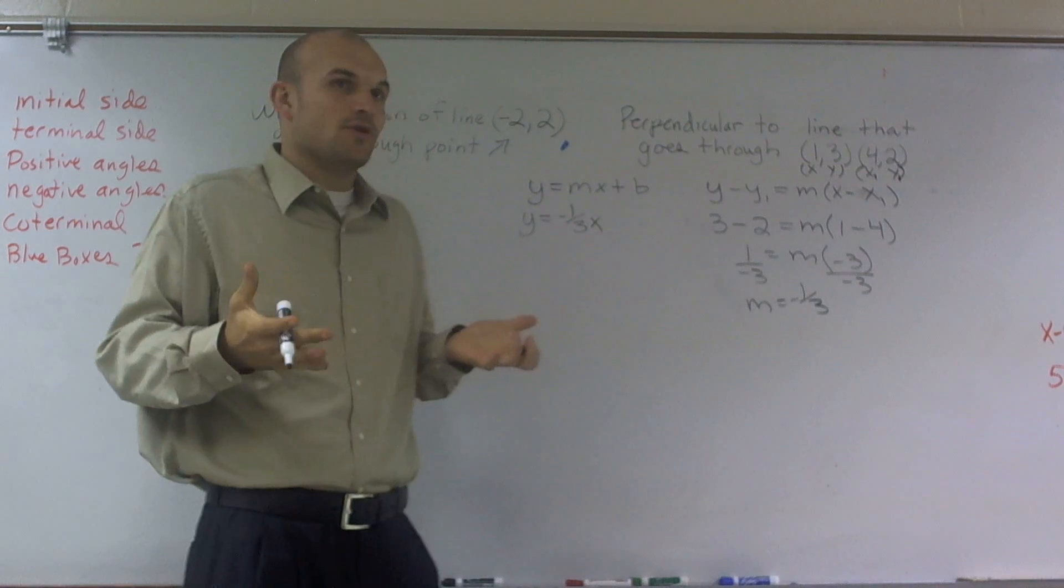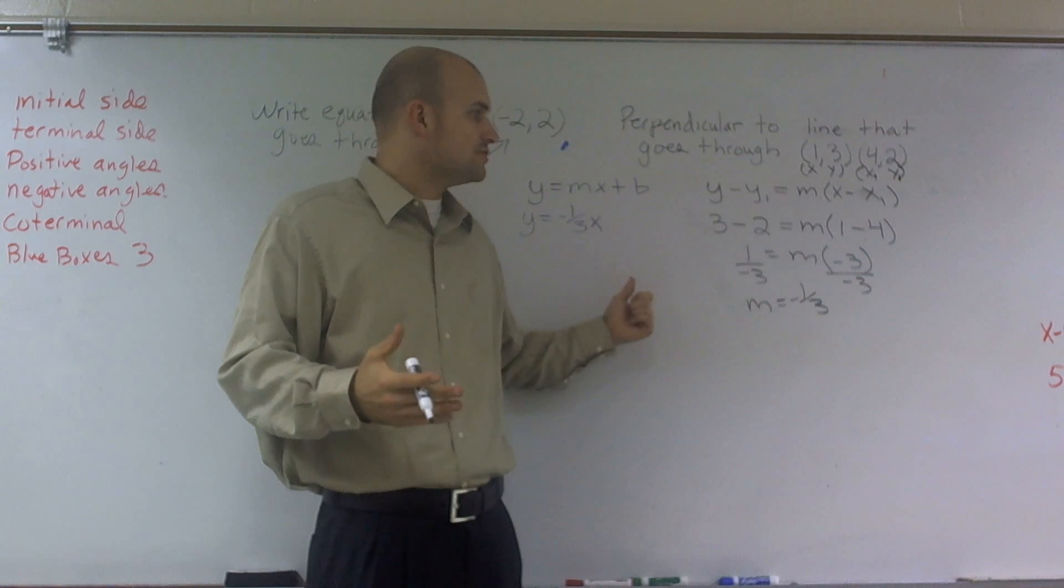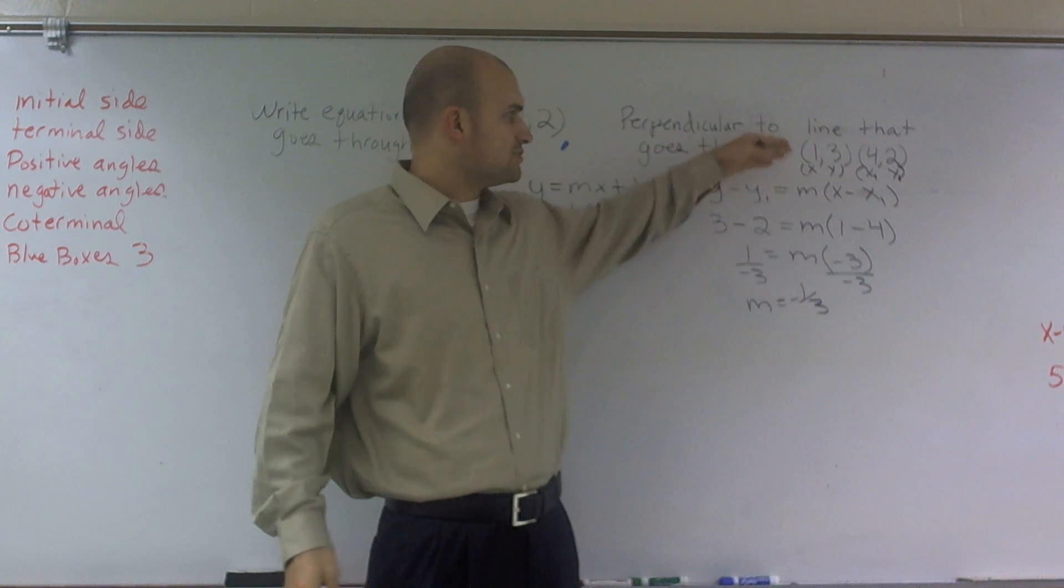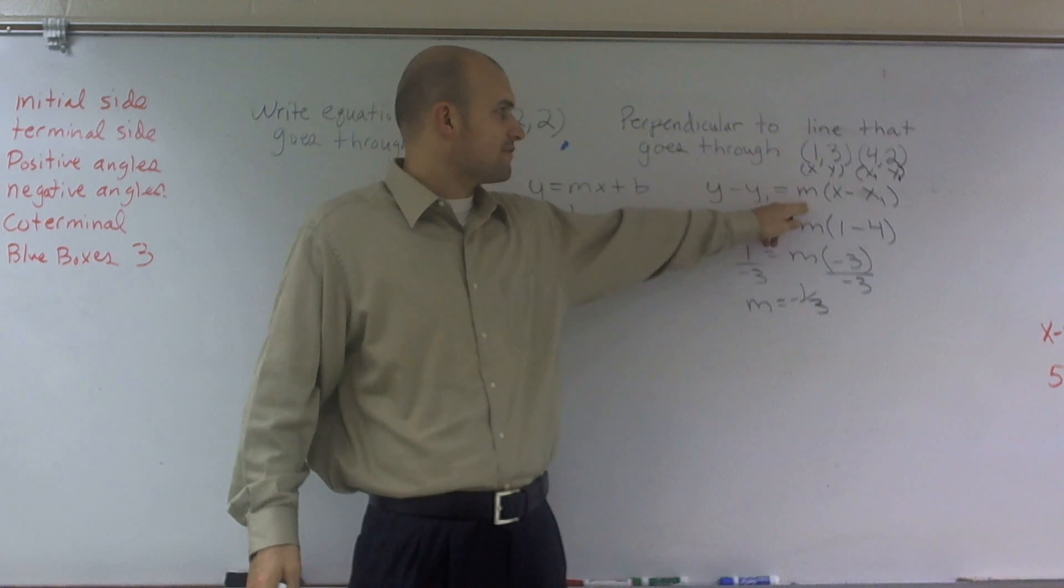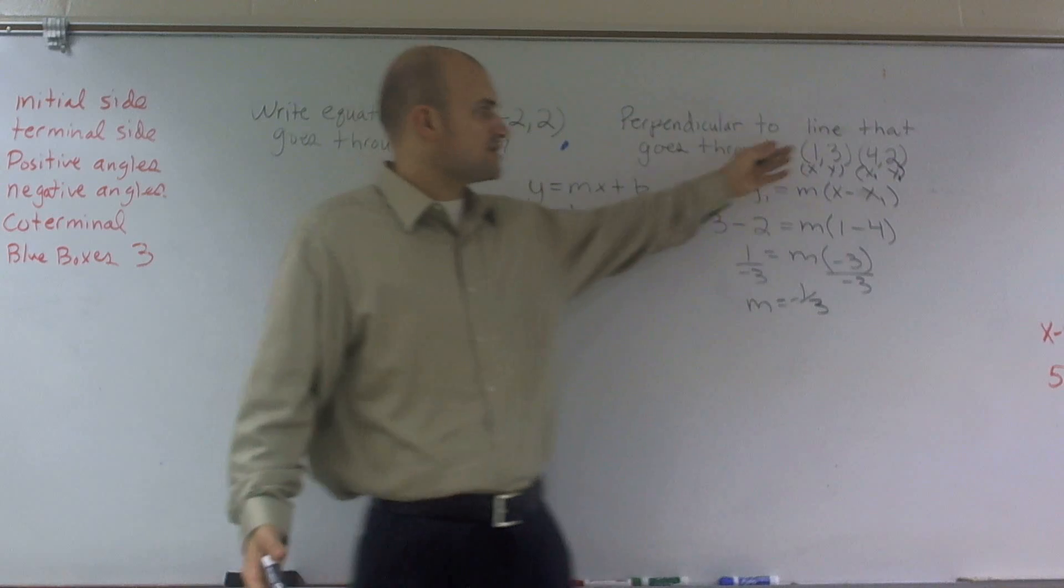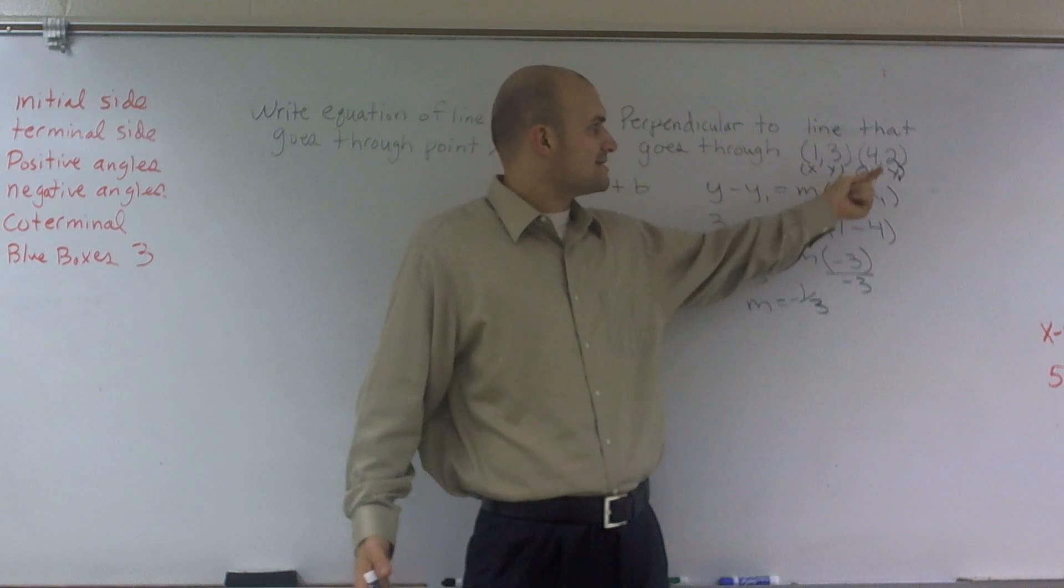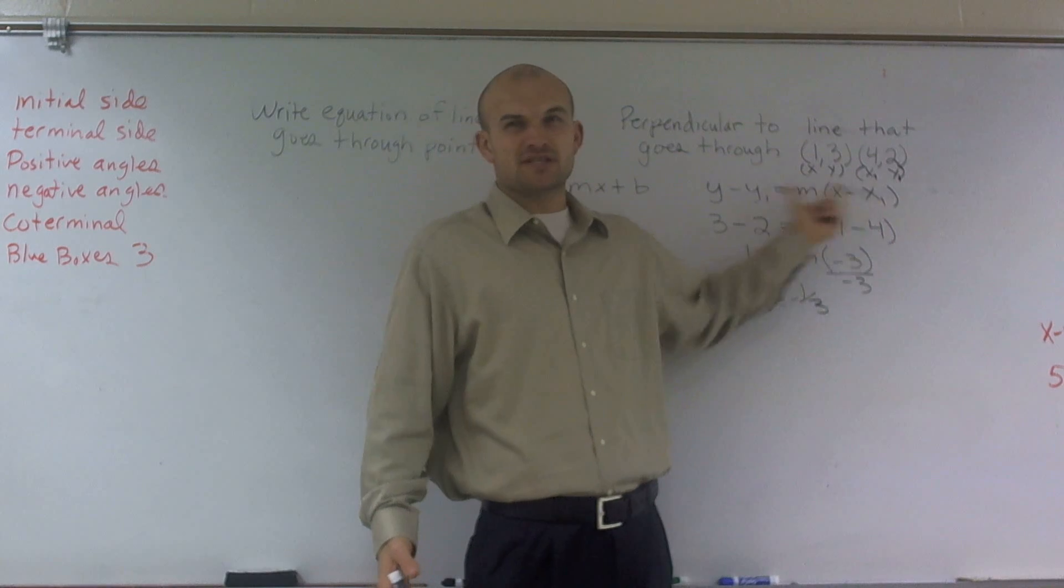Well, now I don't know what the y-intercept is. So to do that, I'm now going to do this problem again, but I'm going to put negative 1 third in for m, and I'm going to plug in one point. Now it's best, it doesn't matter which point you pick, but it's easiest to pick the point y1 x1.